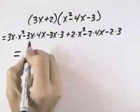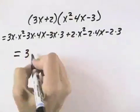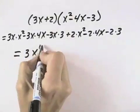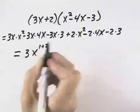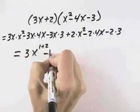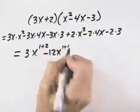So 3x times x squared, the only coefficient is 3, and then we have x to the 1 plus 2 power. Minus 3 times 4 is minus 12x to the 1 plus 1 power.